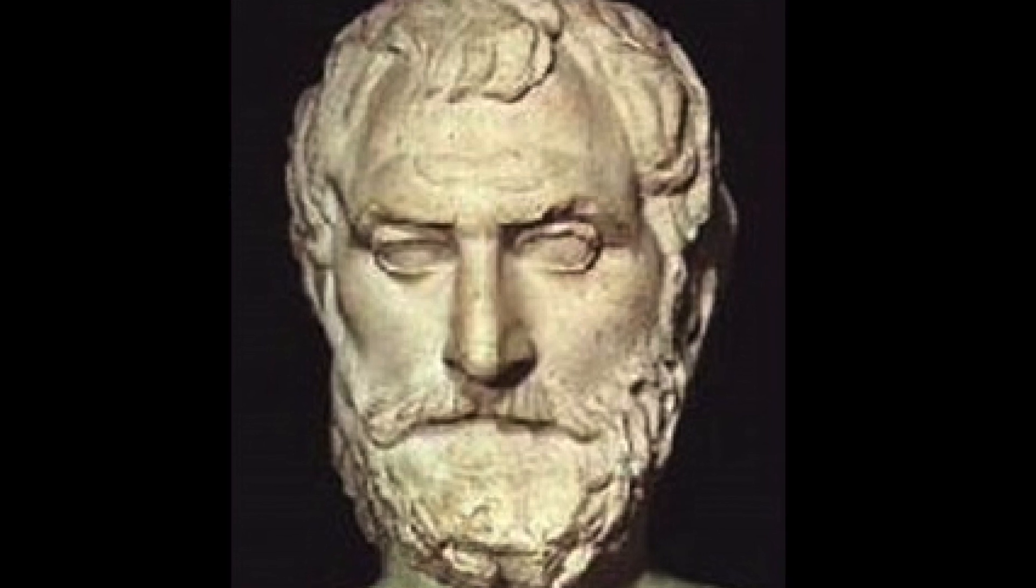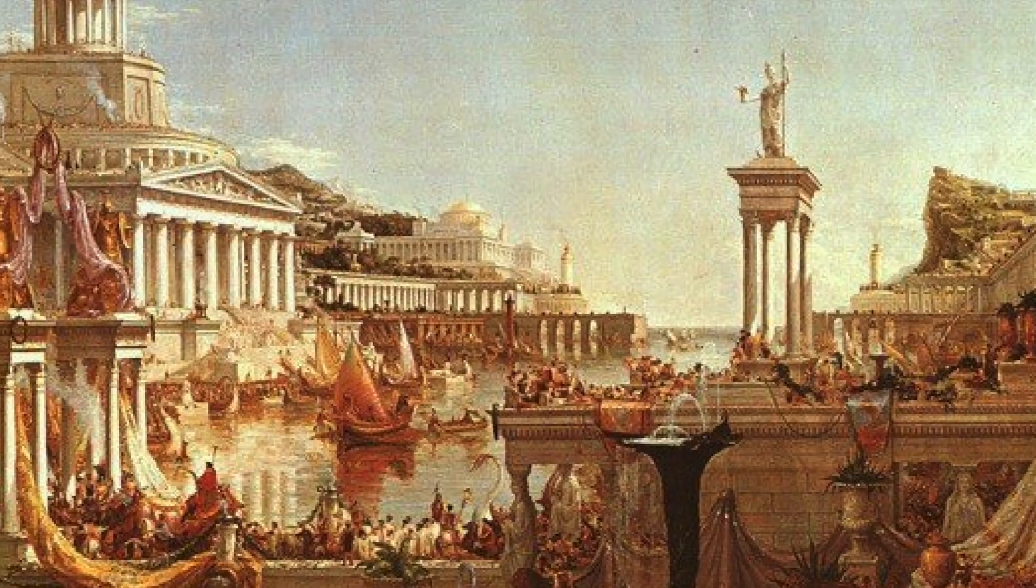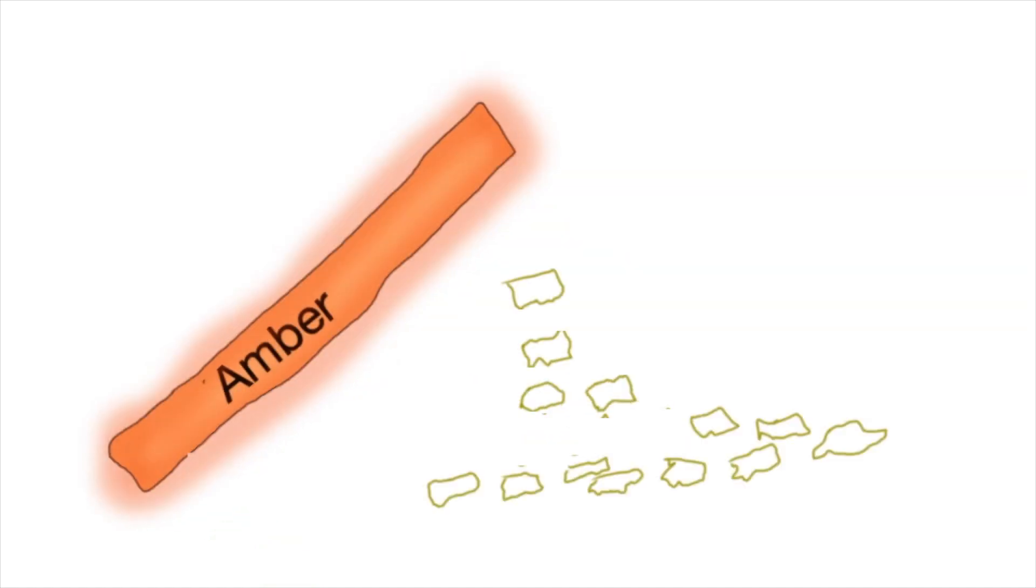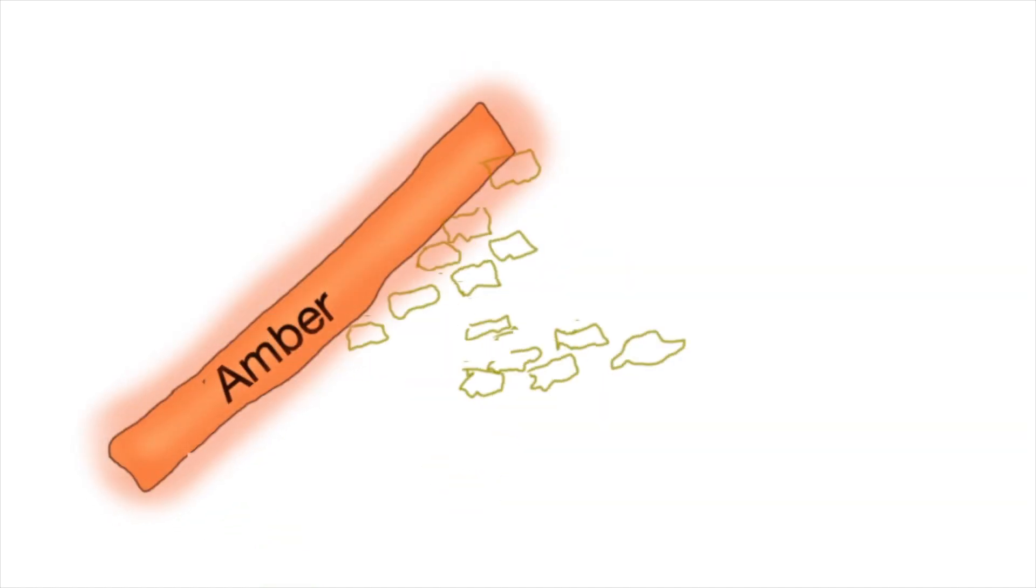Thales of Miletus, the peoples in Greece, noticed some weird facts. When amber is rubbed with silk, they can attract light objects like pieces of paper.